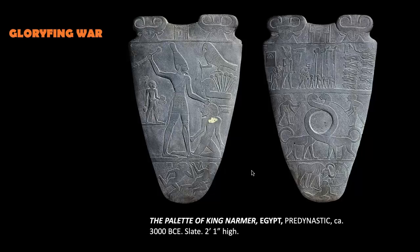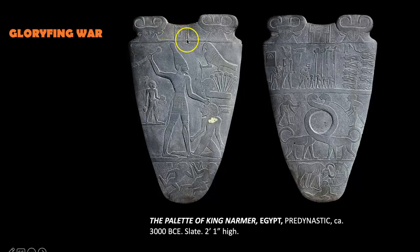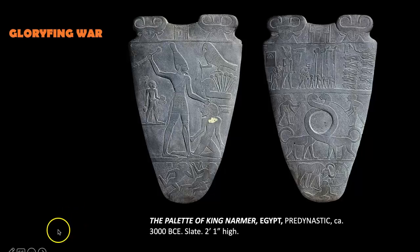There's a hieroglyph at the very top of the palette — an image of a fish, a catfish, and a chisel, framed within the lines that represent the columns of the royal palace. This is his name as a hieroglyph; that's how we know who he is. Of course, that translates to literally mean Narmer.